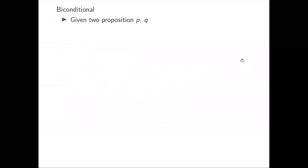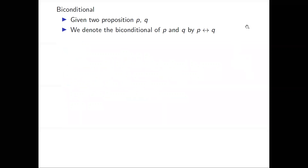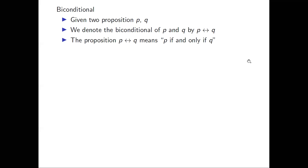Now let's look at another connector called the biconditional. Given two propositions p and q, we write the biconditional as p ↔ q — an arrow pointing both ways. In words, this means 'p if and only if q.' If p is true then q is true, and if q is true then p is true. The biconditional is only true when p and q have the same truth value.